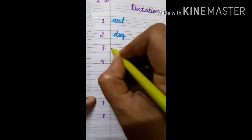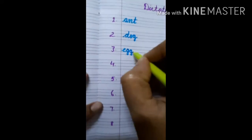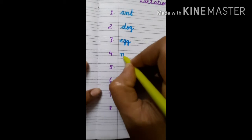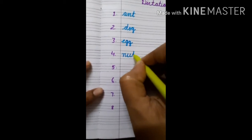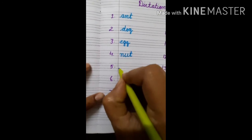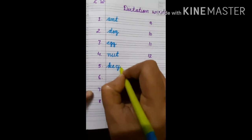Number three: egg - E double G - egg. Number four: nut - N U T - nut. Number five: key - K E Y - key.